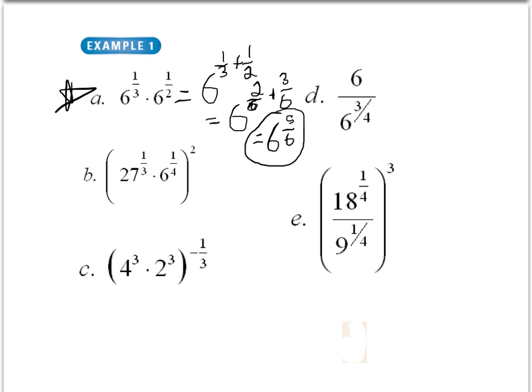Now let's look at example C. In example C, we have both of these terms being raised to the third and outside the parentheses we have raised to negative 1 third. What we could do is distribute this 1 third to each of these terms.